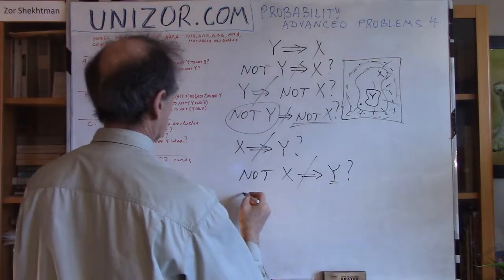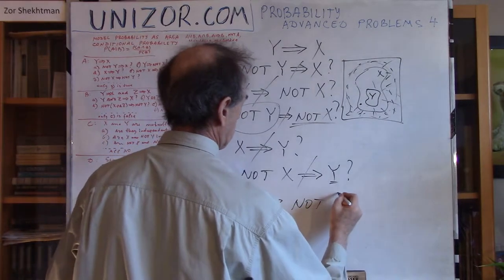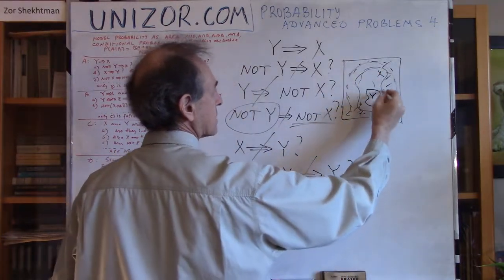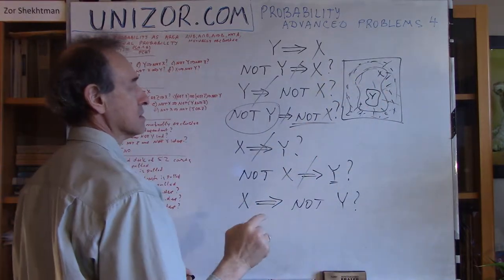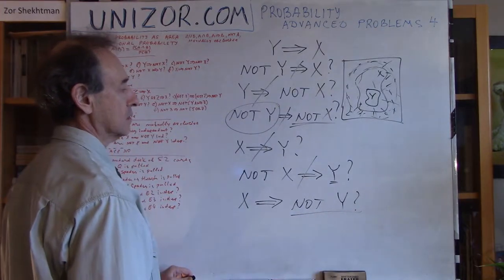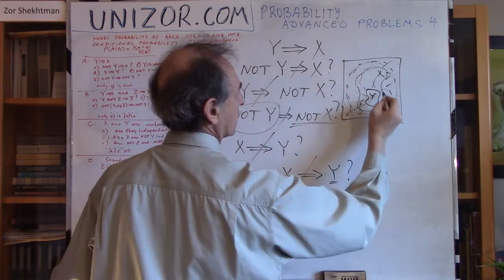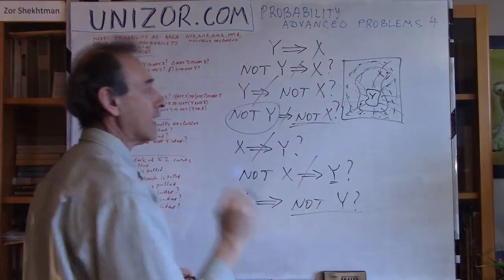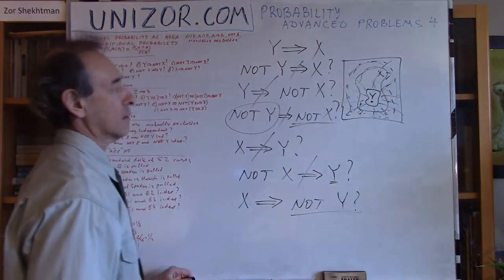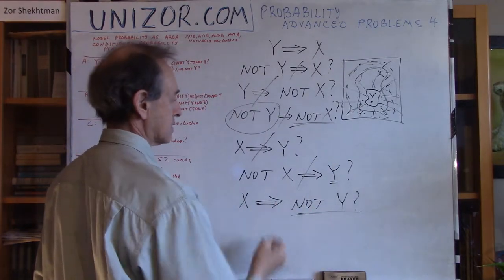From X follows NOT Y — is this true? X happens, which means I'm inside X. Does it automatically mean NOT Y happens — that I'm outside Y? Not Y is outside Y. All I know is the point is inside X. But if the point is here inside both X and Y, it's inside Y, not outside Y. Again, this is not true.